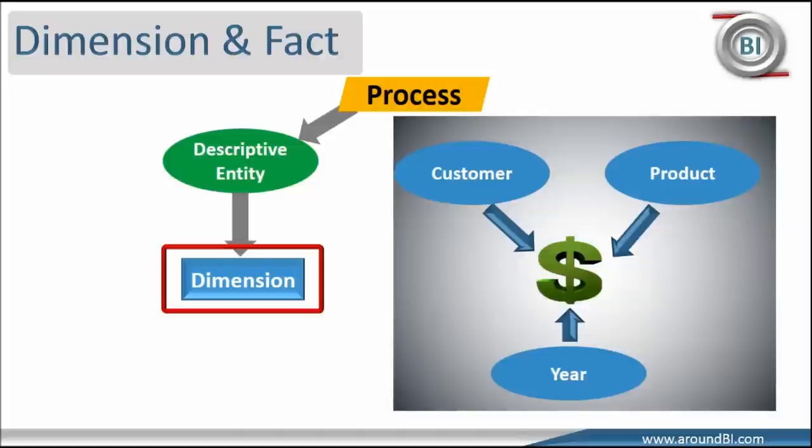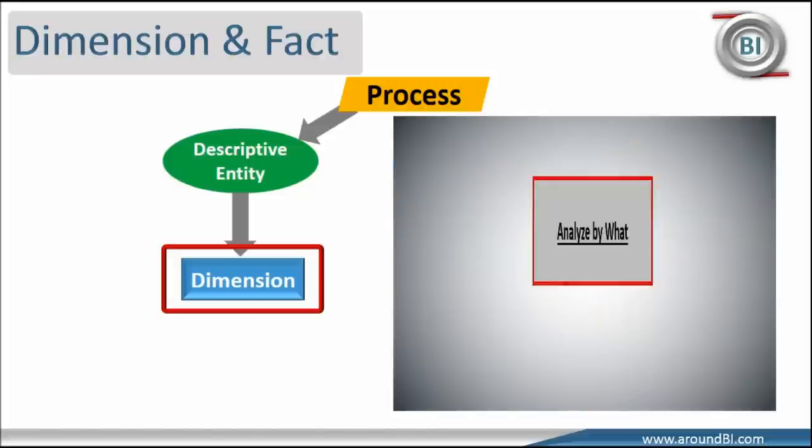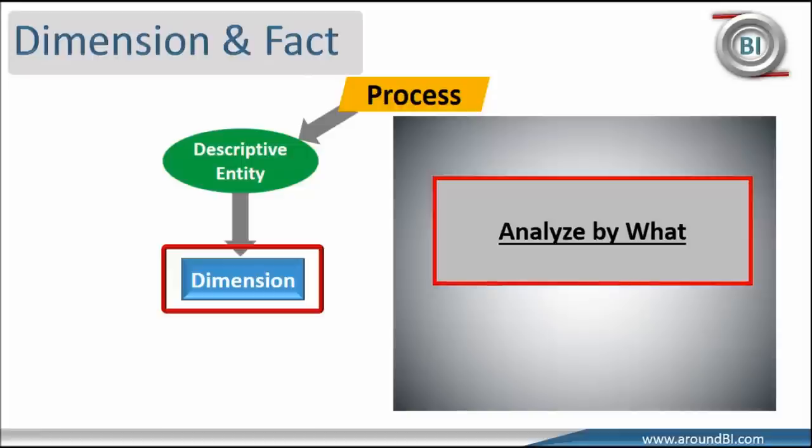A question comes how can we recognize dimension? So, dimensions are generally level based and descriptive entities. Wikipedia has a good trick to ask questions on context of the business like analyze by what, analyze by time or analyze by product or analyze by geography. This analyze by what gives a hint on possible dimension fields.